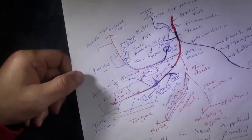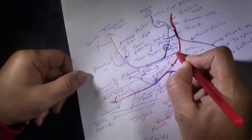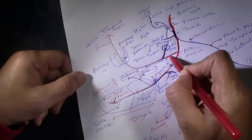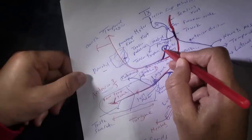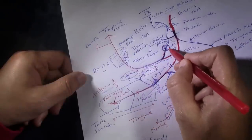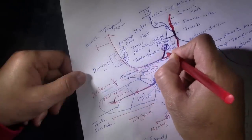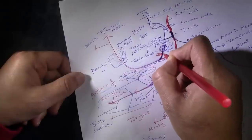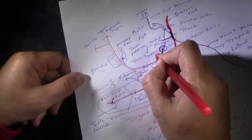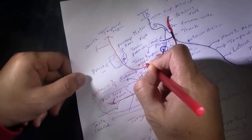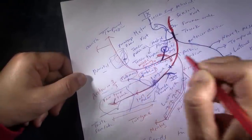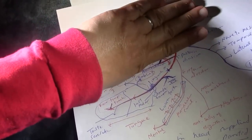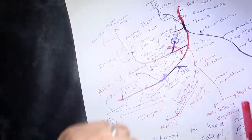The auriculotemporal nerve has two roots: one sensory root from the mandibular nerve, and one parasympathetic root from the otic ganglion. An important anatomical landmark is that the middle meningeal artery ascends between these two roots of the auriculotemporal nerve. This area is covered by the lateral pterygoid muscle.